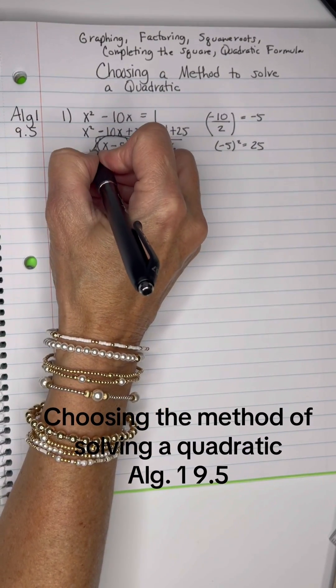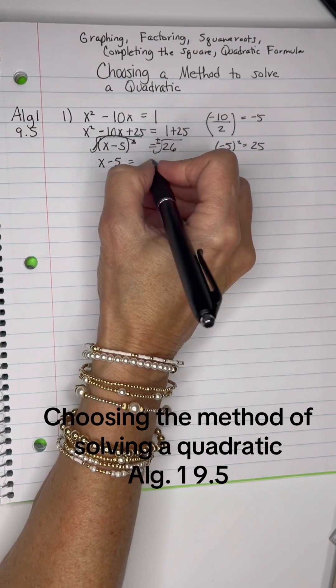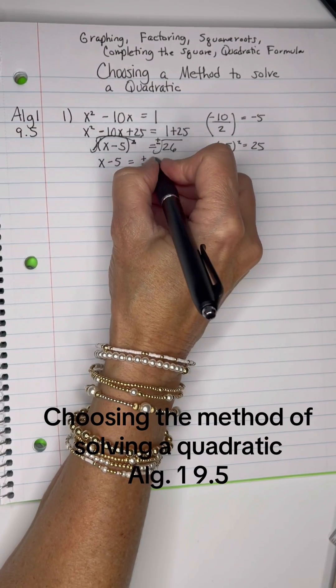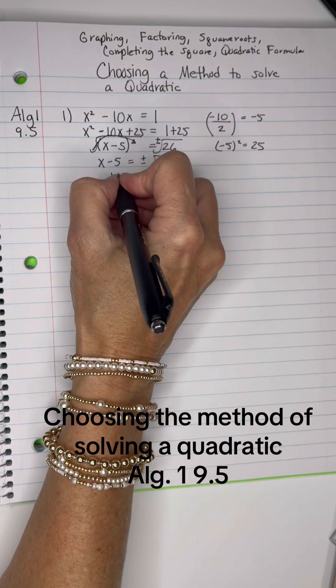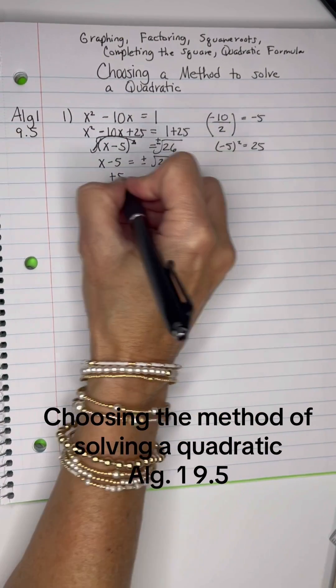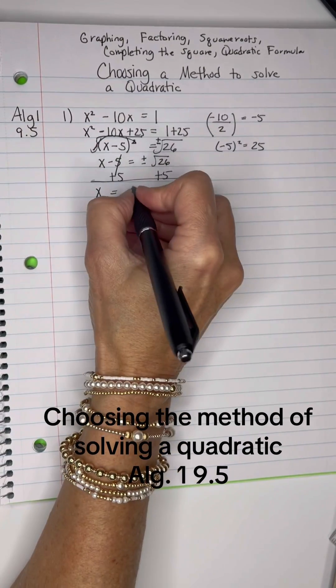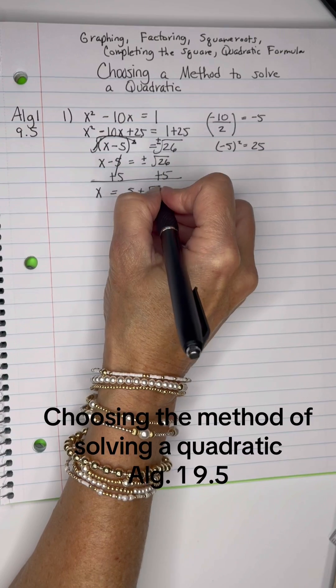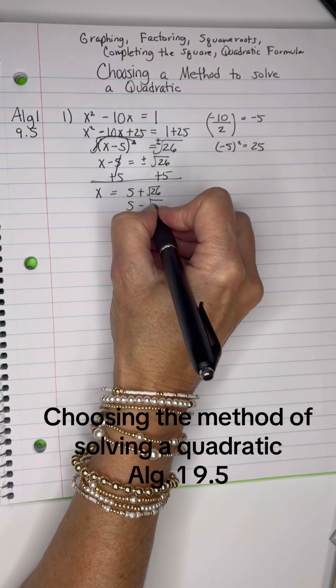So the square cancels the square root out, and x - 5 is freed from the radical, and I've got the ± √26. So that's not a whole number. I will add 5 to both sides, and then I will have 5 + √26, and then I will also have 5 - √26.